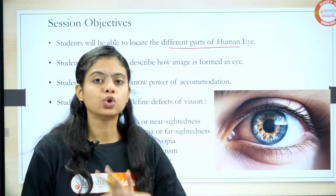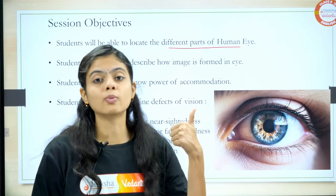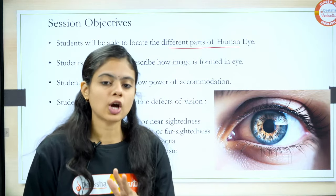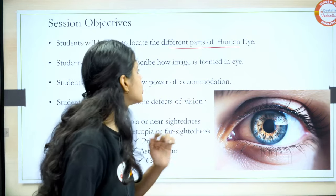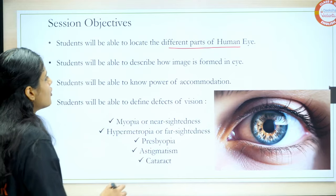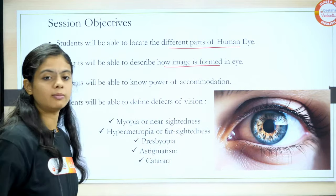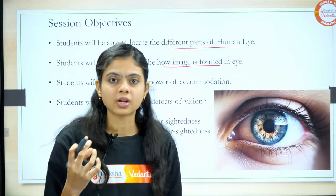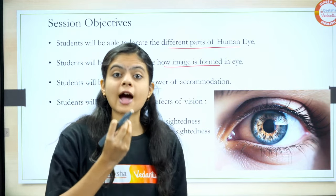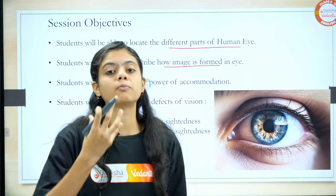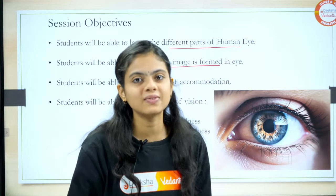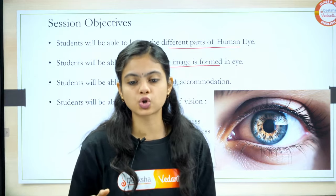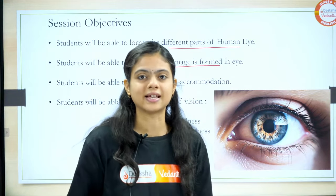It's very easy. You need to draw a human eye, label the parts, and know their functions — I'll be guiding you with that. Moving forward, we'll cover how images are formed in the eye. When all the parts function together properly, we finally get an image. How that image is formed will also be covered in this session.